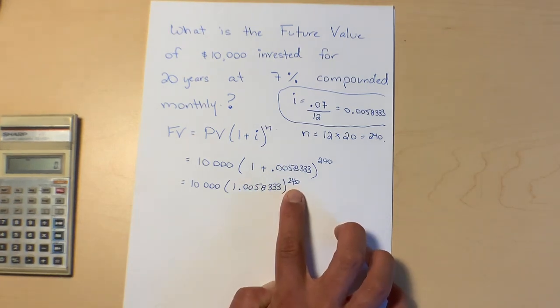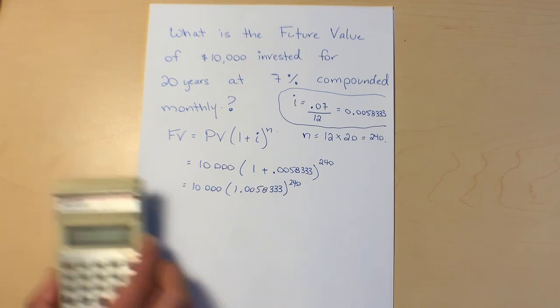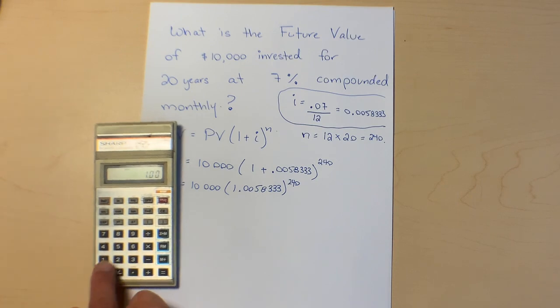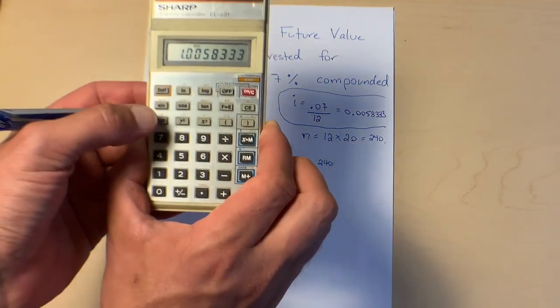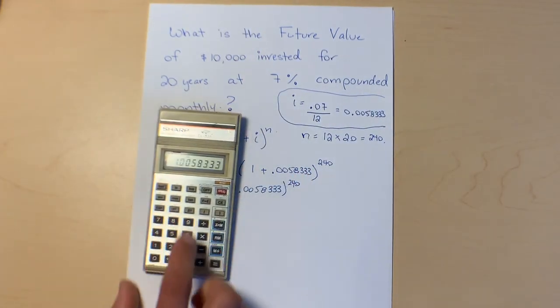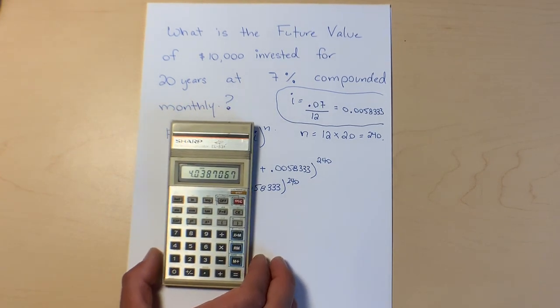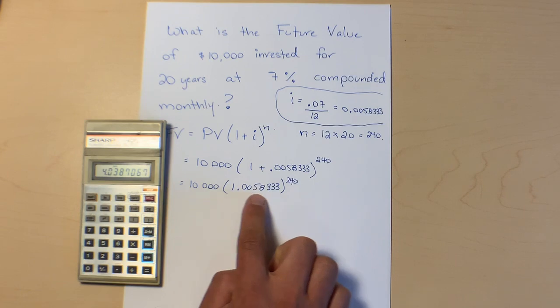240. Remember BEDMAS, order of operations. BEDMAS does exponents before multiplication so I'm going to do this exponent first and then multiply by 10,000. 1.0058333, exponent is this. On this calculator, this little y to the x button is your exponent button. I'm going to press exponent 240 and hit equals.